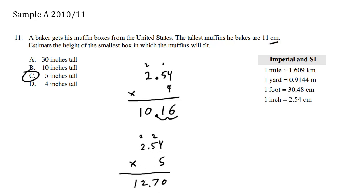And the decimals have 2 digits afterwards. So here we can see that this box with a height of 12.7 centimeters, which means 5 inches, is certainly tall enough to accommodate this tall muffin of 11 centimeters.